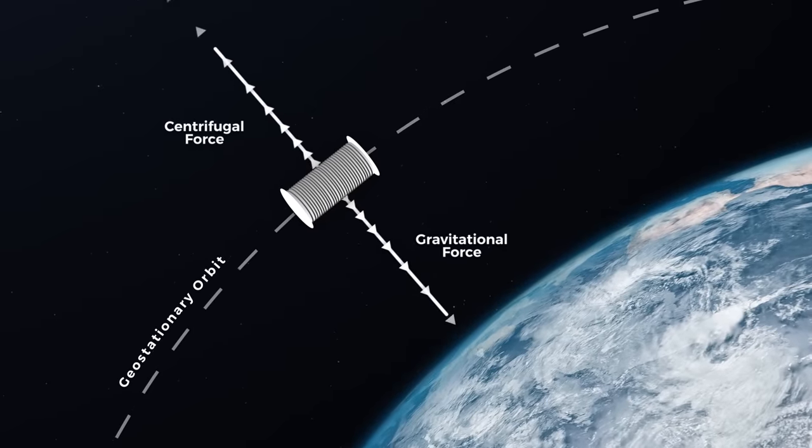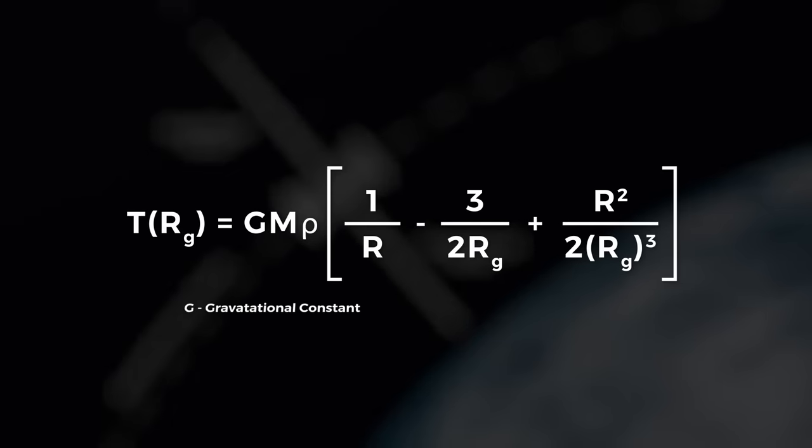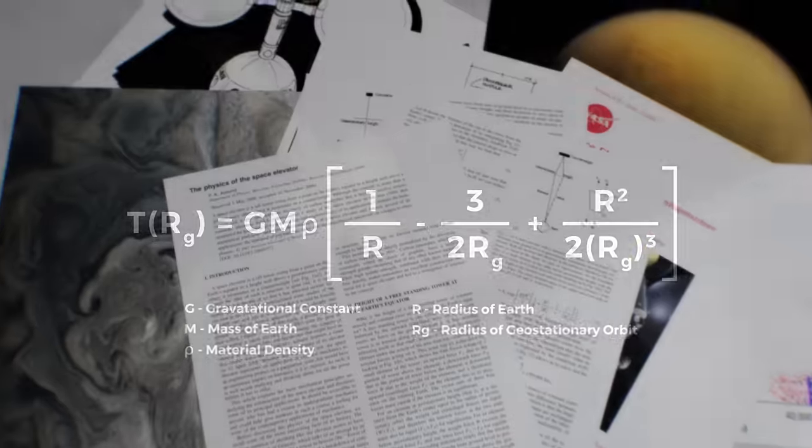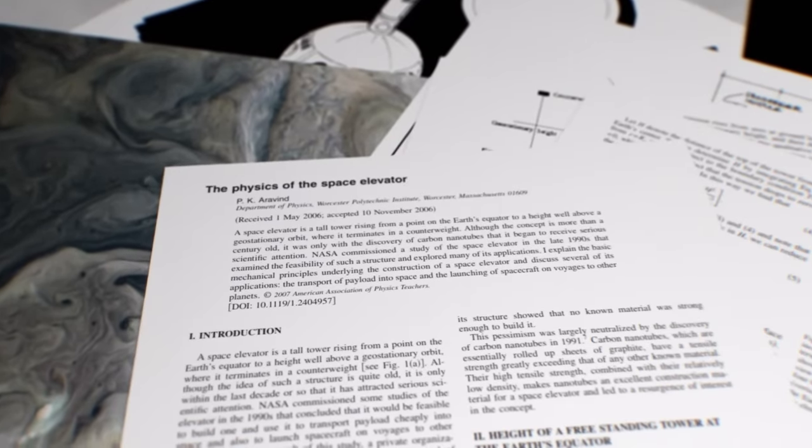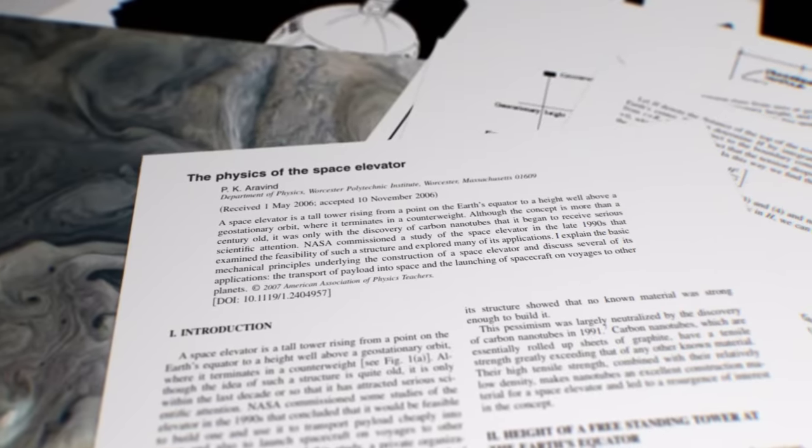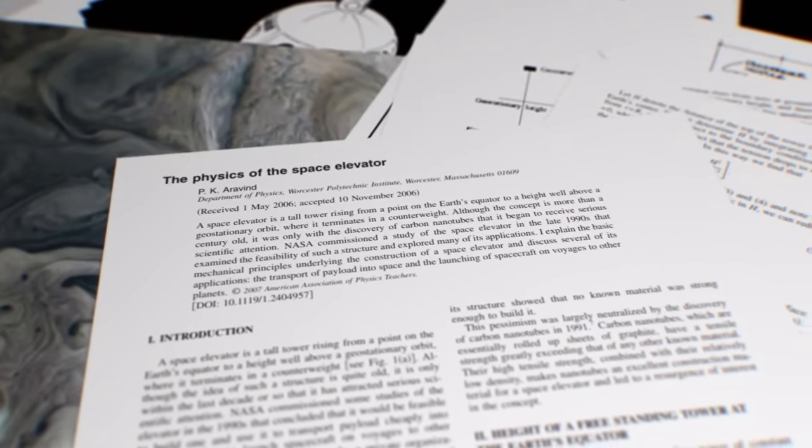We can calculate the max tension in the cable with a uniform cross section with this equation, where g is the gravitational constant, m is the mass of the Earth, rho is the density of our material of choice, r is the Earth's radius, and rg is the radius of geostationary orbit. There is an explanation of how this was derived in this paper, which you can find by matching the reference number appearing on screen now to the reference list in the description.